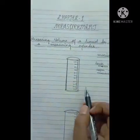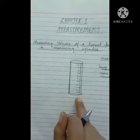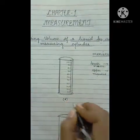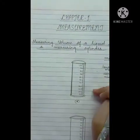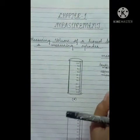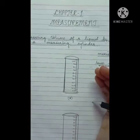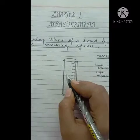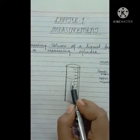Now, suppose we are measuring the volume of water in a measuring cylinder. We pour water into the cylinder. First, you have to observe whether the liquid is forming a lower meniscus or an upper meniscus. Since it is water, it will obviously form a lower meniscus.